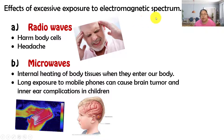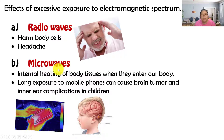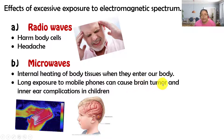Now we look at the effects when you are overexposed to electromagnetic waves. For radio waves, they can harm your body cells and cause headaches — for example, using a mobile phone too much leads to headaches. For microwaves, they cause internal heating of body tissue. Long exposure to mobile phones can cause brain tumors and inner ear complications, especially in children.